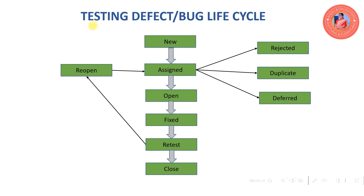When we see there is a difference or deviation in client requirement with respect to application functionality, then we log the defect. In the defect life cycle, the first status is new. New status means testers, for the first time when they are going to log the defect, the tester will give the defect status as new.